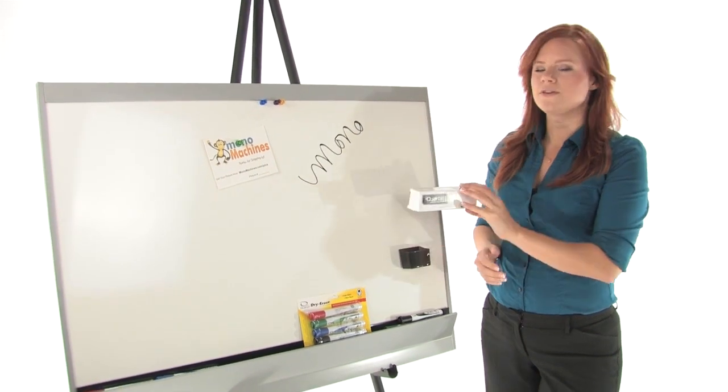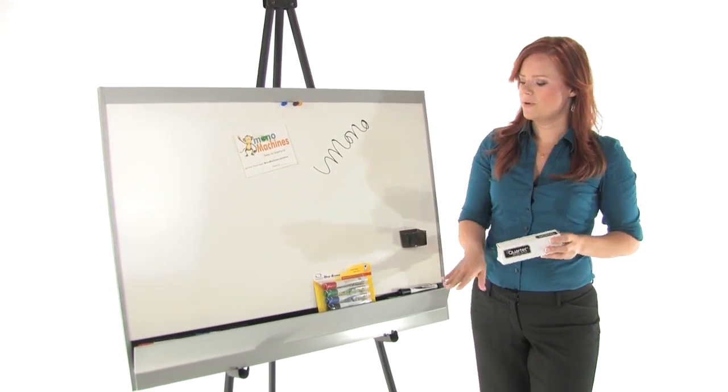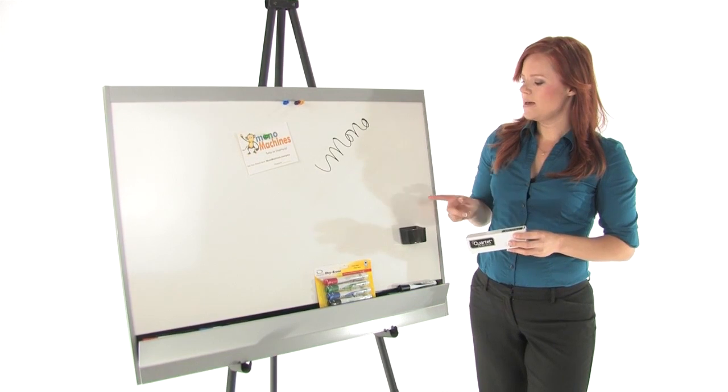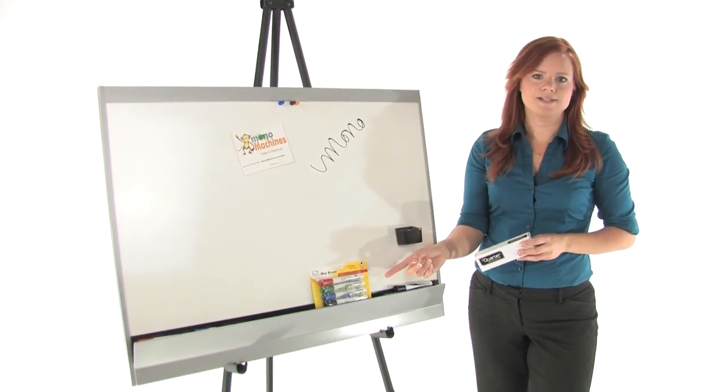It can be mounted to the wall in 4 places with the included mounting kit. It comes with a marker tray, magnetic eraser caddy and 4 dry erase markers.